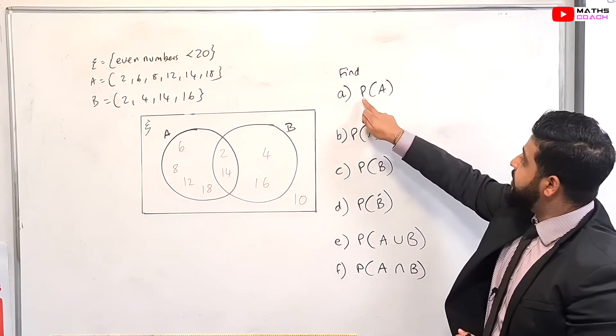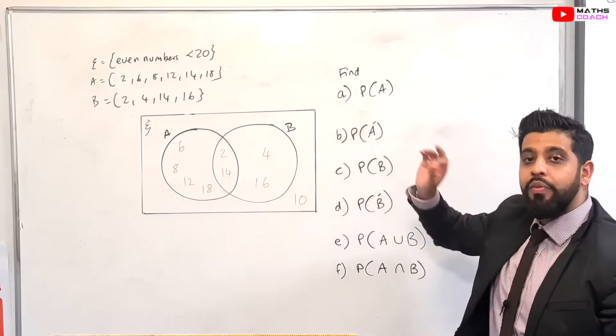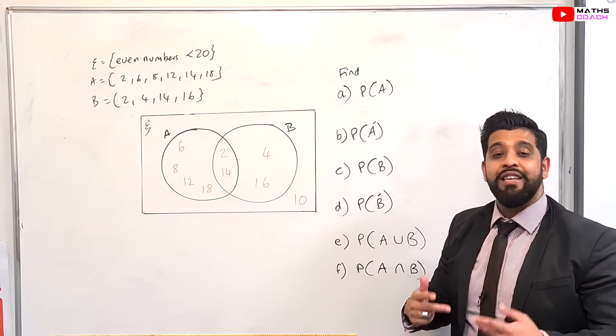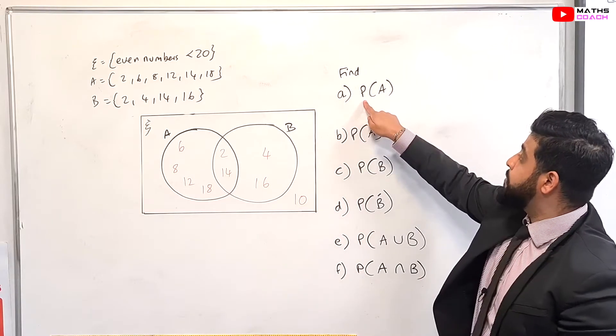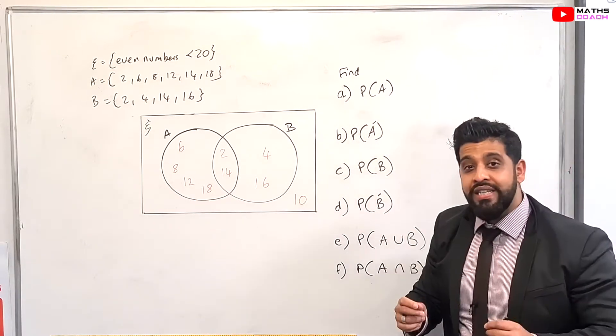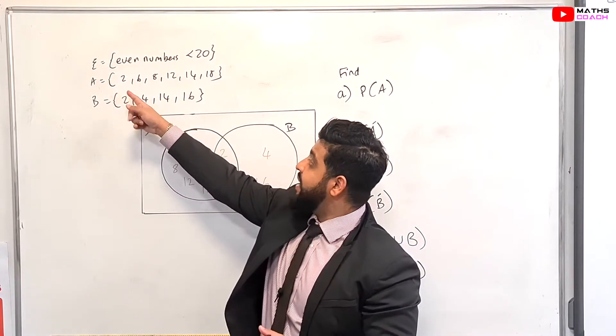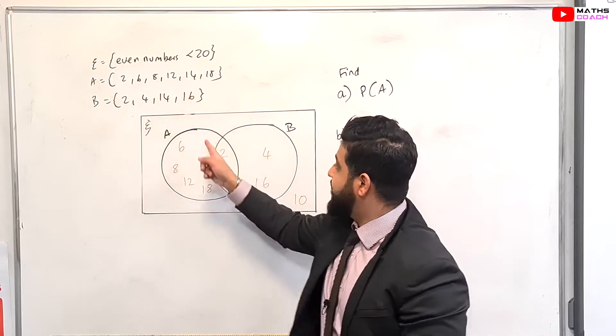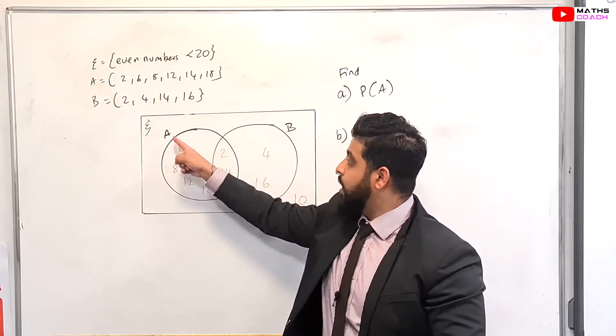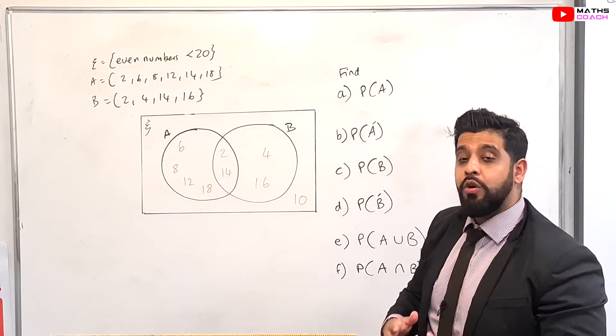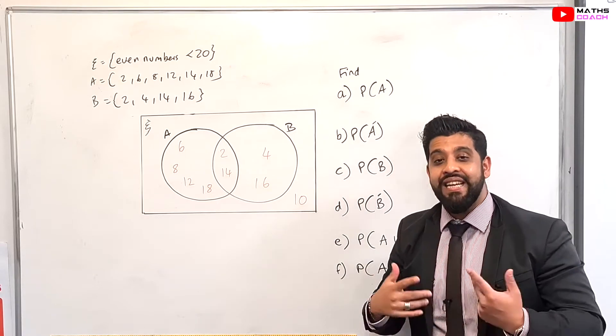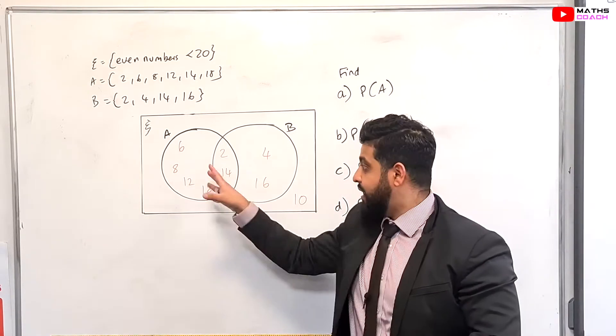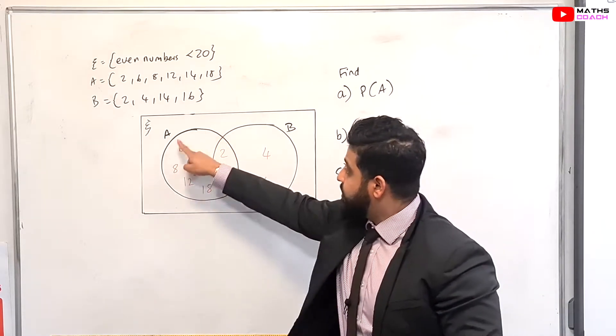This question says find P(A). Now that P means probability and inside the bracket is the probability that you're looking for. So you're looking for the probability of event A. What is event A? Just remind yourself, event A is all the even numbers 2, 6, 8, 12, 14, 18, which is inside this circle A. So we want to know what the probability of selecting A would be or a number that is in A would be.